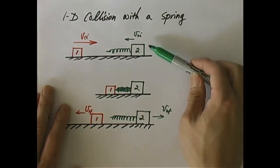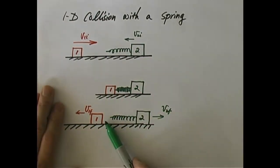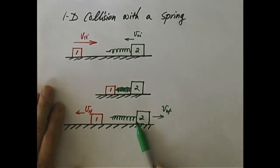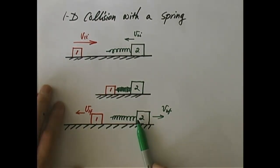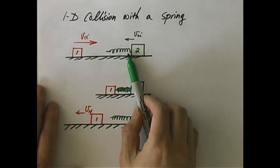So we start with this initial state, and that's during the collision, and after the collision, of course, these two separate as the spring gets decompressed. Let's analyze this process. From the conservation of momentum point of view, does the presence of the spring change the conservation of linear momentum?